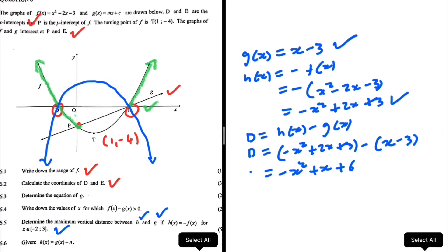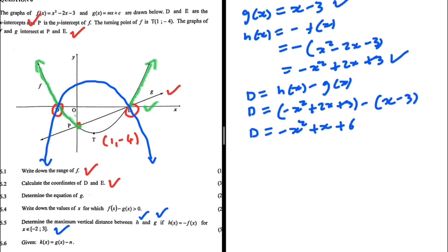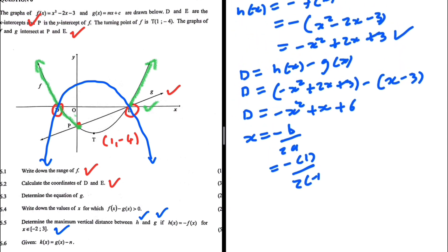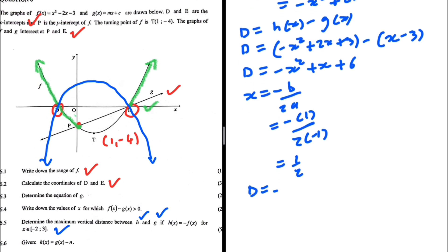To find the maximum of -x² + x + 6, we use x = -b / (2a). Here -b = 1 (coefficient of x) and a = -1, so x = -1 / (2 × -1) = 1/2. Substituting x = 1/2 into the distance expression: -(1/2)² + (1/2) + 6, which gives 6.25 or 25/4.